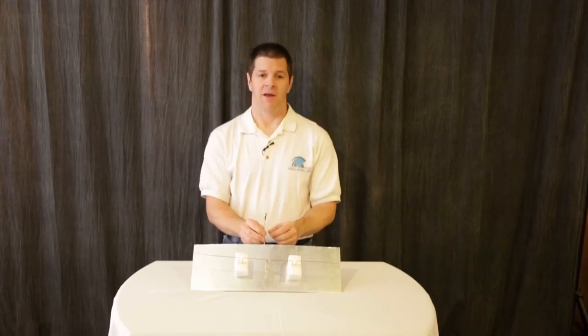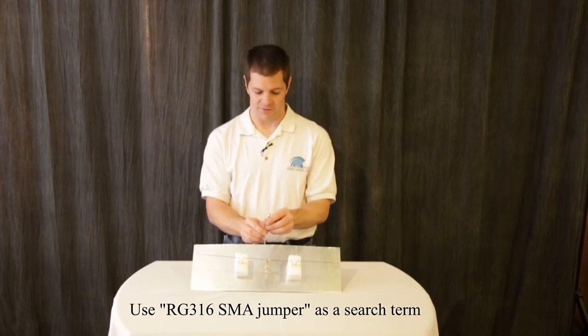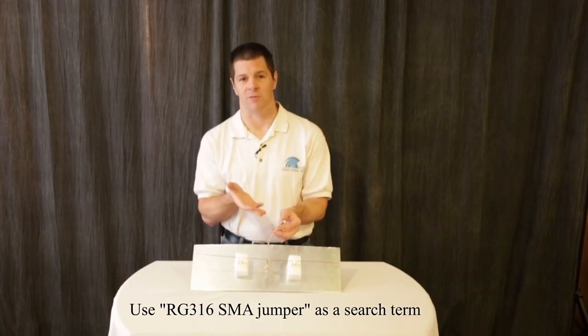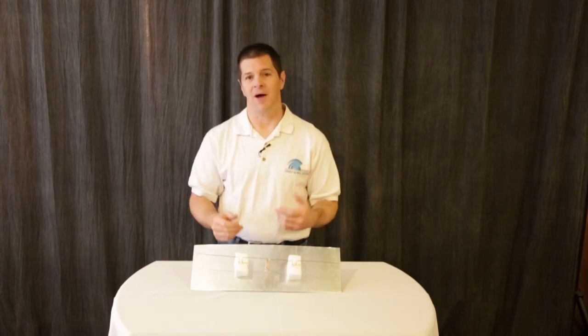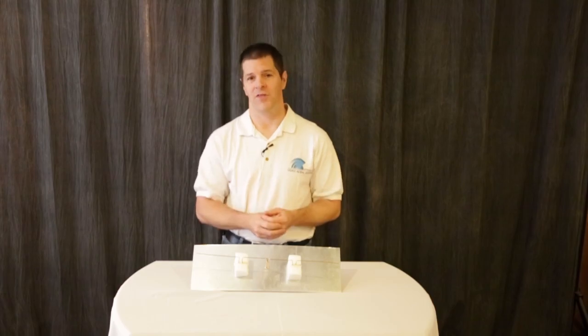The last thing you'll need is a coaxial cable jumper. You can get this off eBay—just type in RG316 jumper and look for one with an SMA fitting. They're about four dollars. With that, let's go build the antenna.